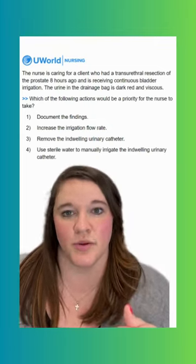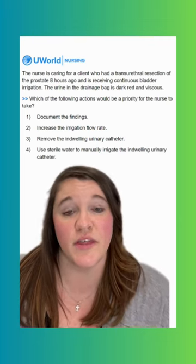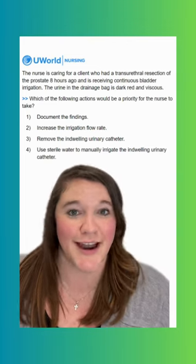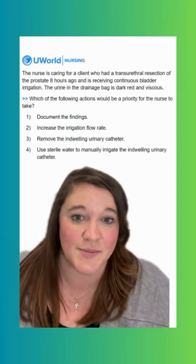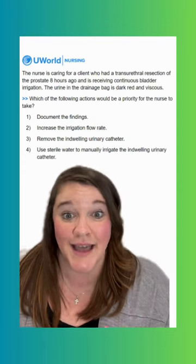Option three says to remove the indwelling urinary catheter. This is an incorrect option. It's something we don't want to do. It's not even a priority, it's just not something we want to do here. We need that catheter in place, like we said, to be able to irrigate to prevent the clot formation.